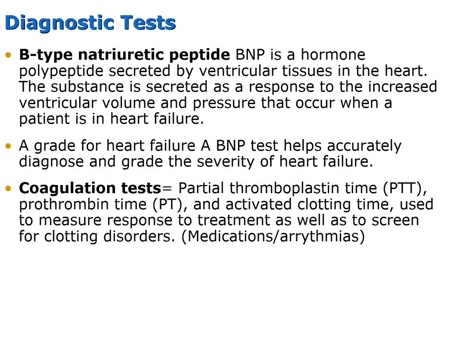We may also test patients for B-type natriuretic peptide (BNP), a hormone secreted by the ventricle tissues in response to increased pressure or volume in the ventricles during heart failure. A normal BNP would be less than 100; for patients in heart failure, it's generally between 200 and 300 or higher. Coagulation tests may also be required, especially if patients are on specific medications for arrhythmias or heart valve issues.